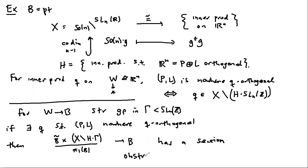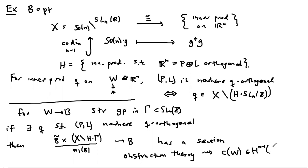Using obstruction theory — which is designed to give cohomological obstructions to finding sections — you can obtain a characteristic class CW in degree n minus one of the base space. The degree is n minus one because that's the codimension. You try to build the section inductively over the skeleton, and you can think of this characteristic class as counting the intersection with the removed piece when choosing a generic section.